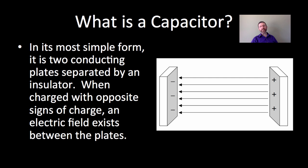What exactly is a capacitor? Well, in its most simple form, a capacitor is just two conducting plates, kind of like this and this, separated by an insulator. In this case, the insulator that I'm using is air, right between these two.